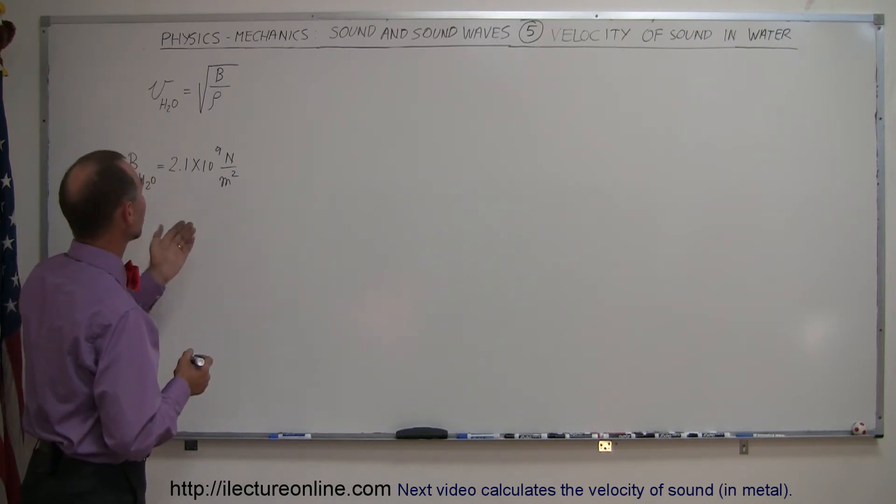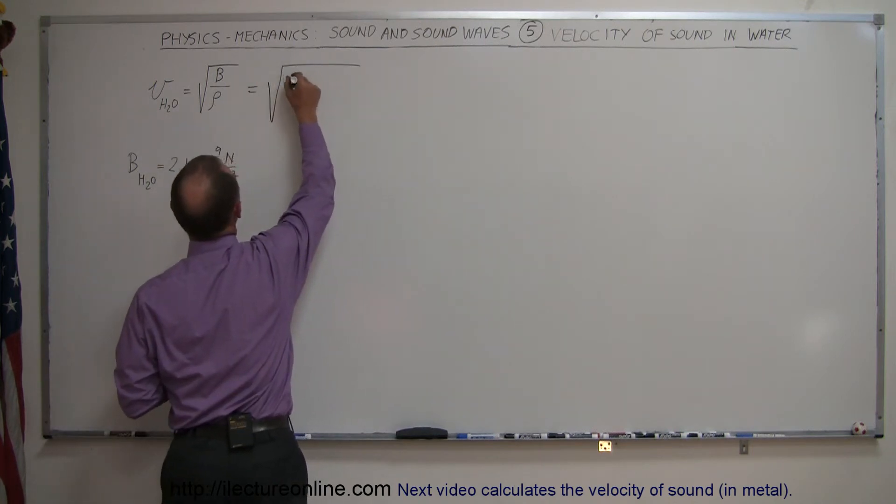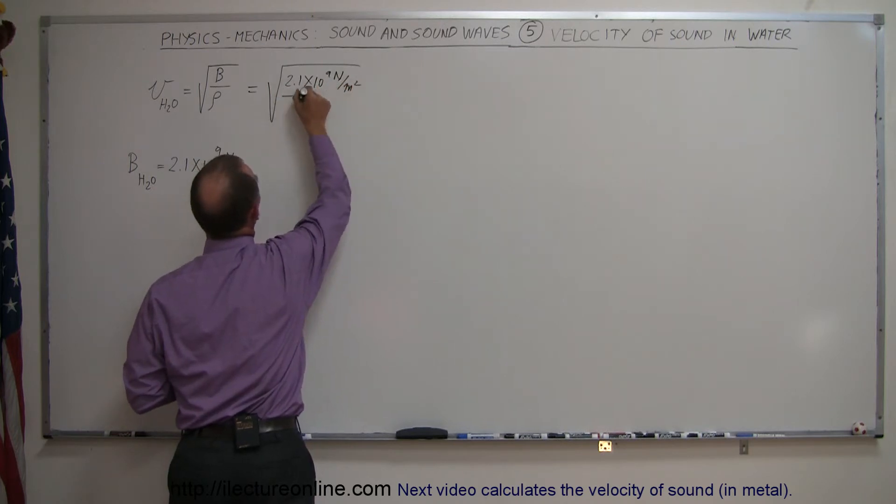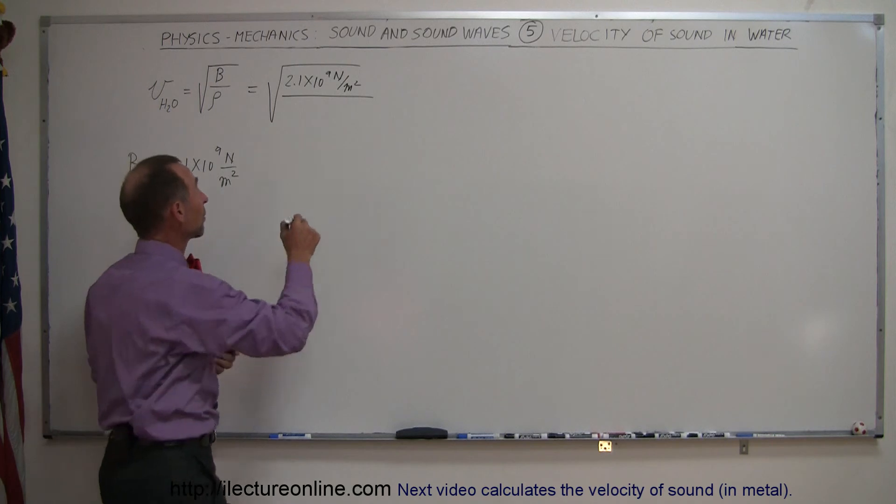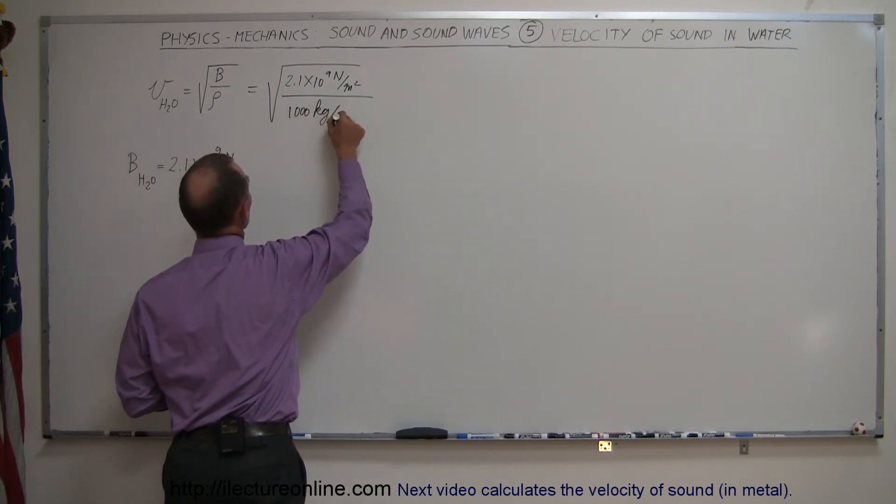Alright, so let's plug those numbers in and see what we get. This is equal to the square root of 2.1 times 10 to the 9th newtons per square meter, all divided by the density of water. Of course, the density of water is 1000 kilograms per cubic meter.